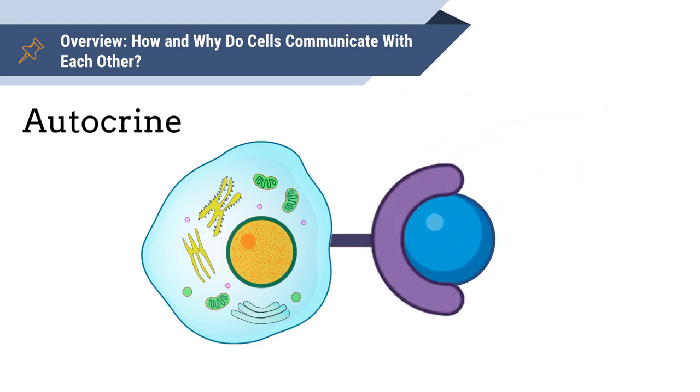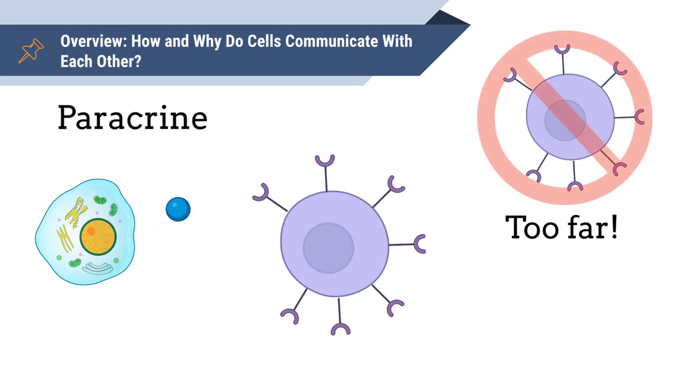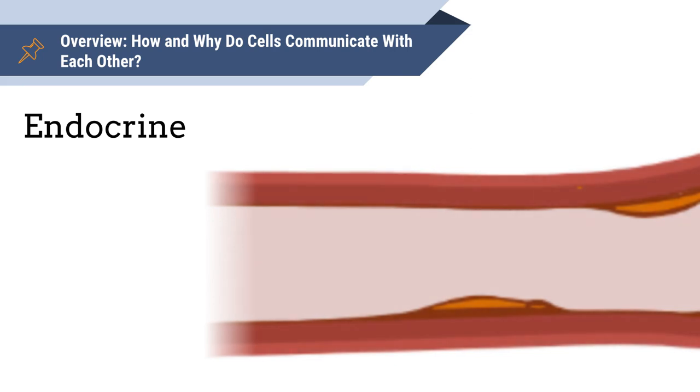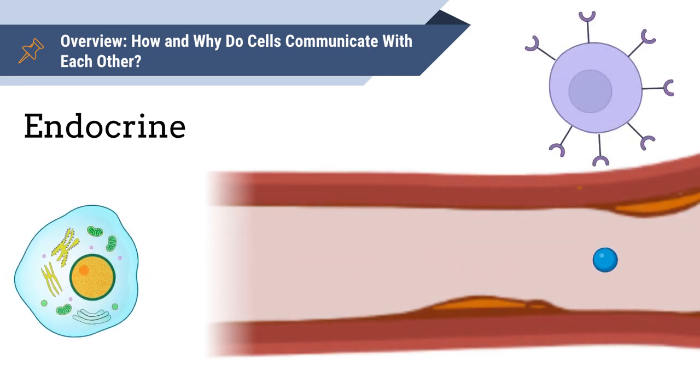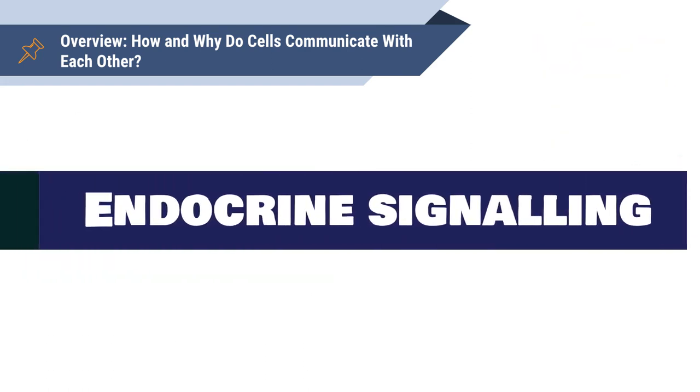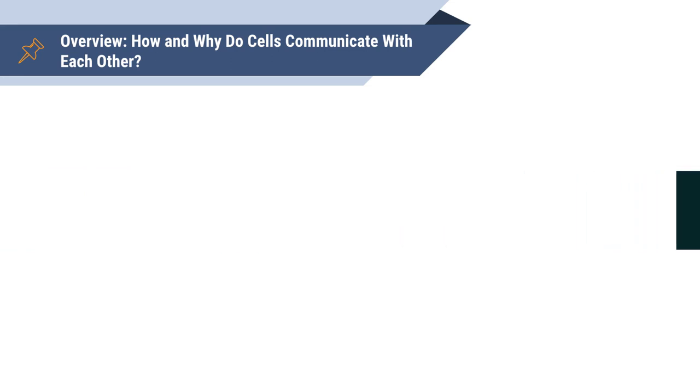Paracrine signaling occurs when the cell secretes ligands that affect neighboring cells. Lastly, endocrine signaling is when the cells secrete a hormone and affect cells over a long distance, typically traveling through the bloodstream. For the purpose of this video, we will be focusing on cell signaling within the endocrine system.